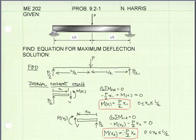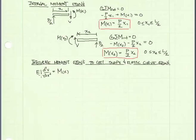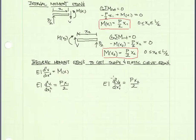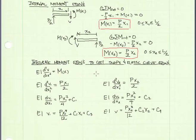The next step is to integrate our moment equations to get our slope equation and elastic curve equation. I'll use the relationship EI times the second derivative of v equals the moment. I'll set our moment equation equal to this expression for both the left and right sides of the beam with their corresponding moment equations, then integrate twice. After integrating both sides two times, each integration produces a constant of integration, so we end up with four constants of integration total: C1, C2, C3, and C4.